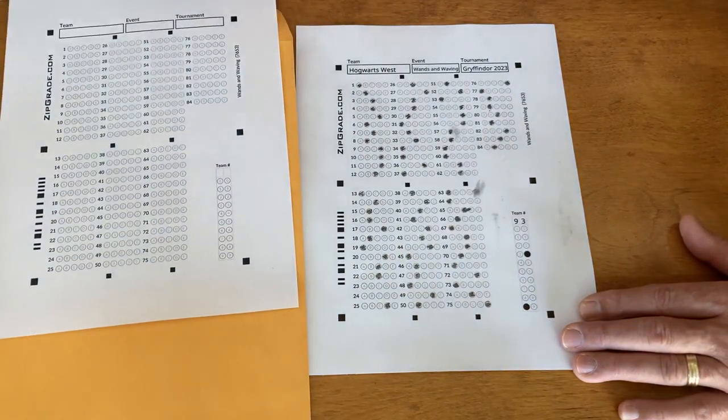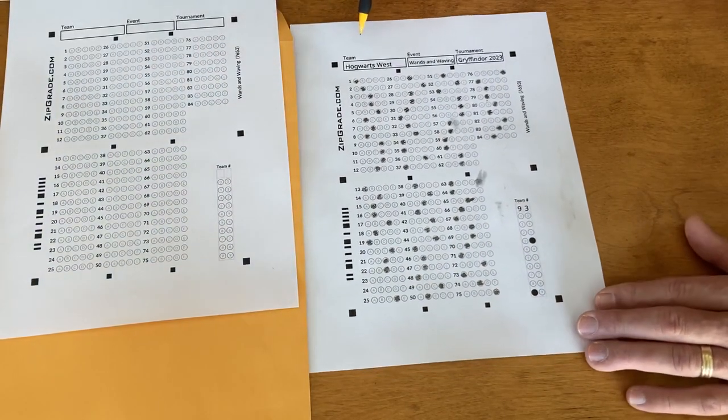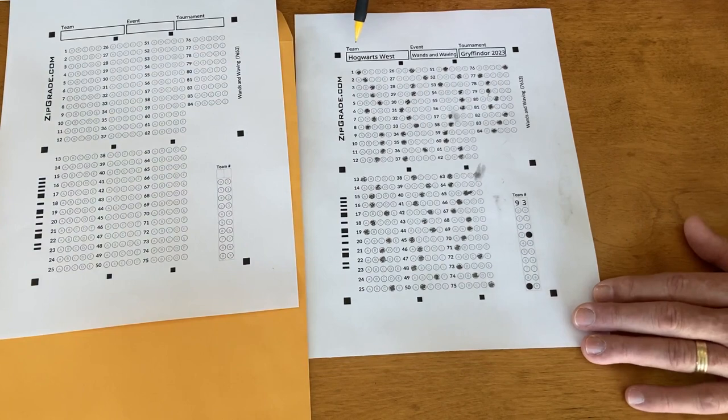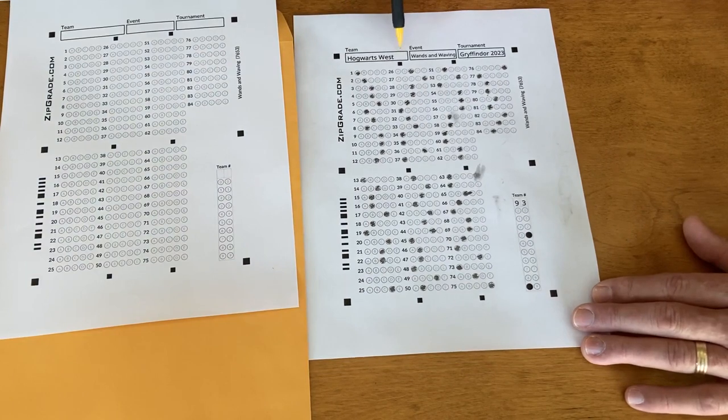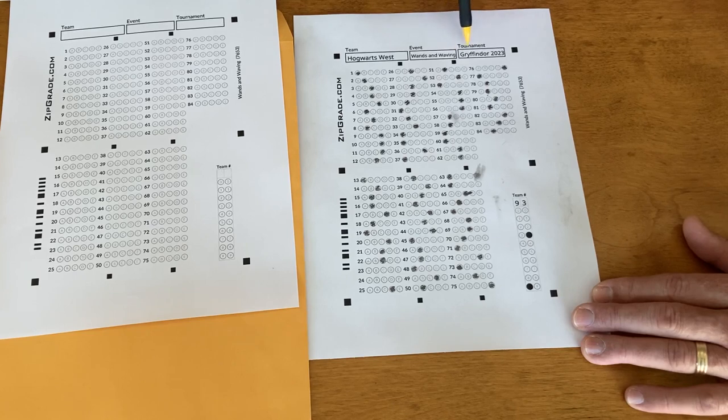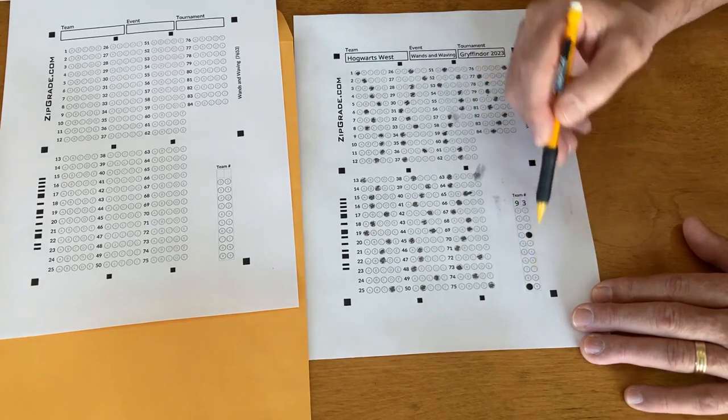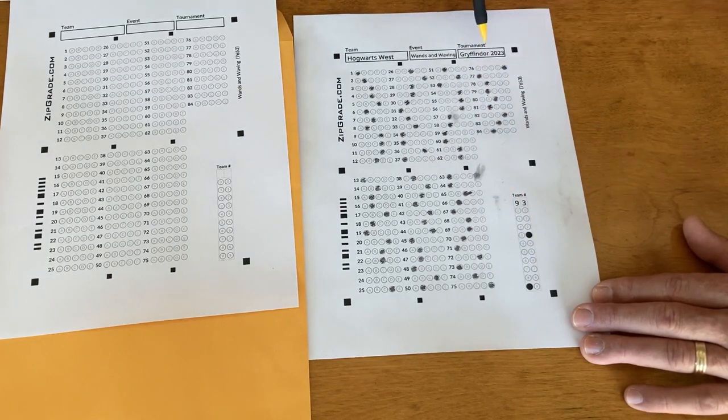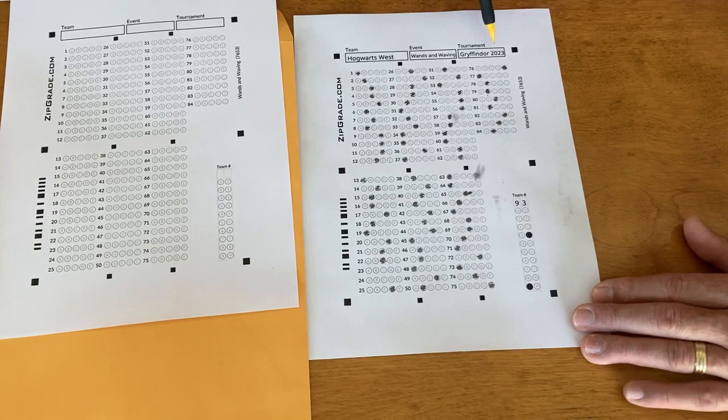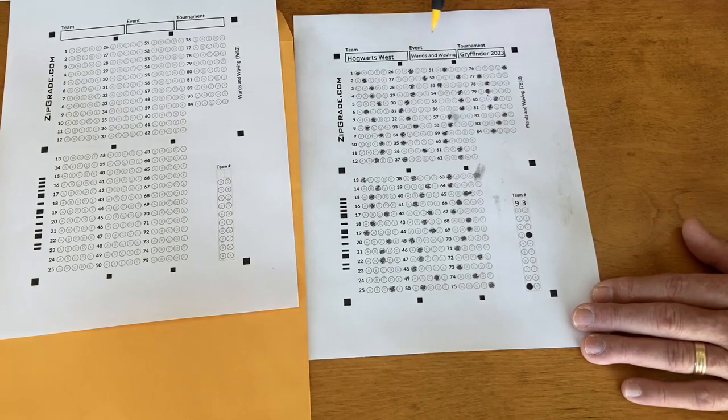Here's an example of what you'll be getting back after the practice tournament. You'll see that your team name is written here, the event that the particular students participated in, and the name of the tournament that you attended. There's your team number down here. Notice all of these things are pre-printed.